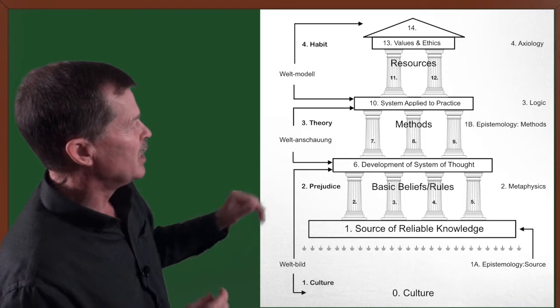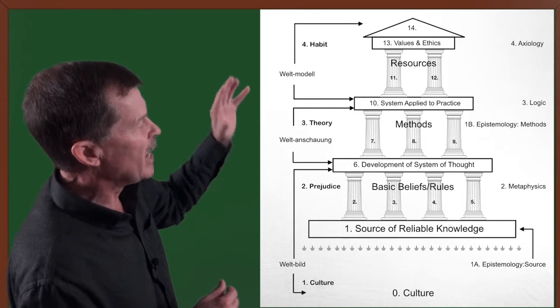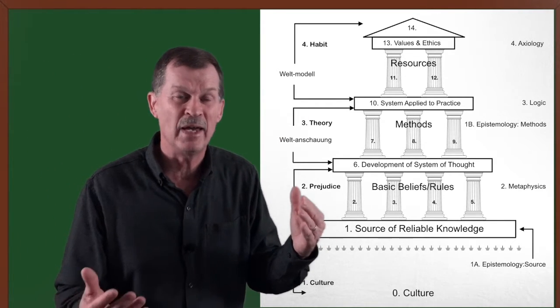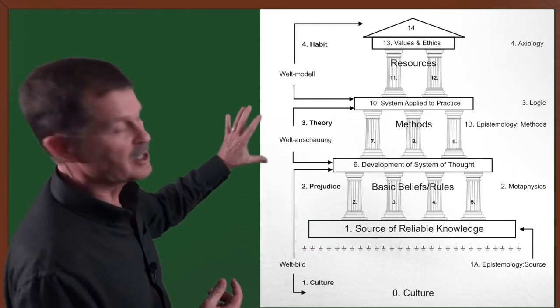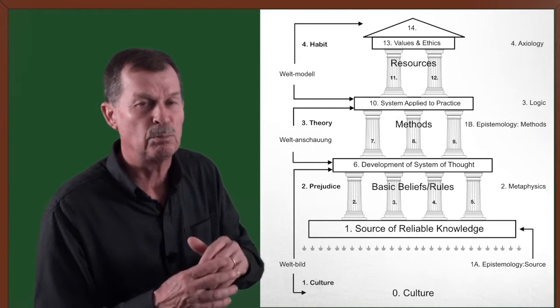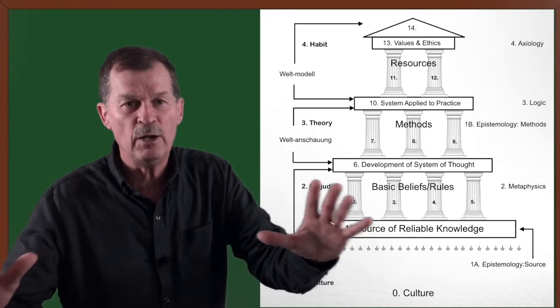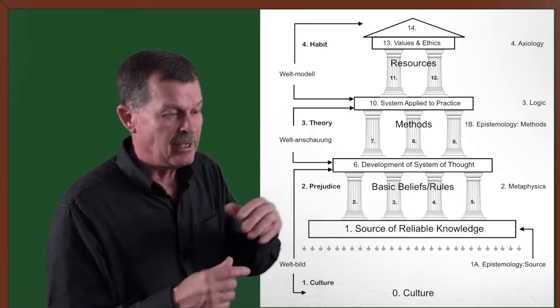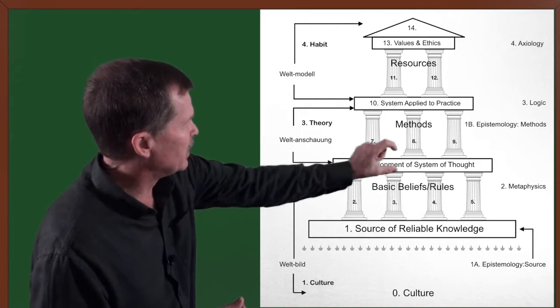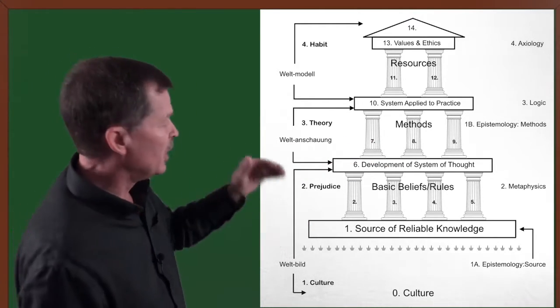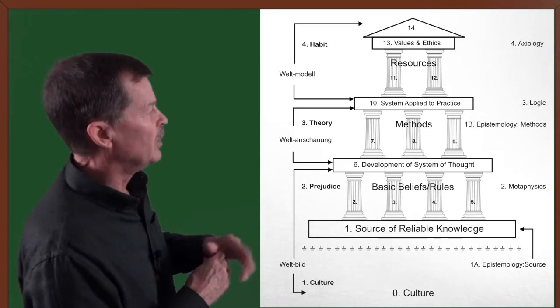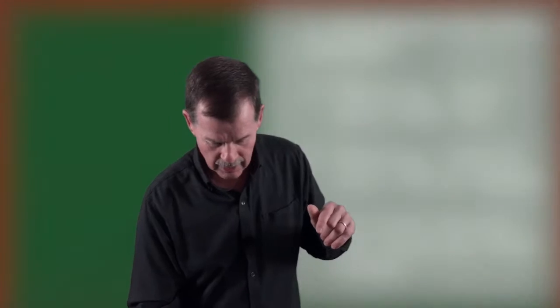Here we are. We have the epistemology, which is the source of our reliable knowledge. After the source comes our basic beliefs, which would be the metaphysics. That is part of our prejudices. That is what Stephen Jay Gould had mentioned. He went from culture to prejudices. Prejudice means to prejudge. We have to have a mental framework already in place to be able to judge. What are our basic beliefs? They come out of our source of reliable knowledge. Those are prejudices also.